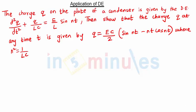So this is our question. The charge q on the plate of a condenser is given by the differential equation d²q/dt² + q/LC = E/L sin(nt). Then show that the charge q at any time t is given by this equation.